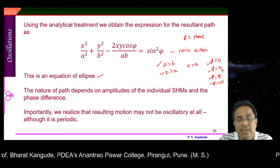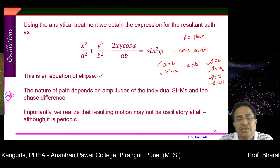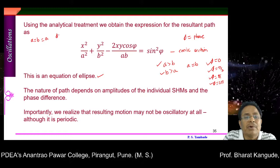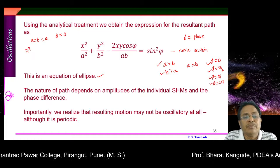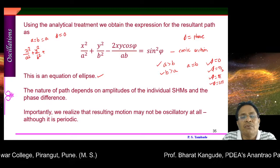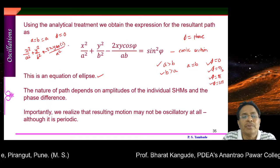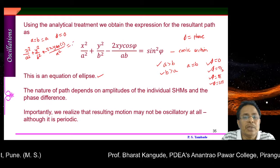When we analyse different amplitudes and different phase differences, this equation can give millions of different types of paths. A minor change in a or b, or a minor change in φ, results in a different format. For example, in the simple case when amplitudes a and b are equal and φ = 0 — meaning no phase difference — the equation x²/a² + y²/b² − (2xy cosφ)/ab = sin²φ simplifies. Since cos(0) = 1 and sin(0) = 0, the right-hand side becomes 0.